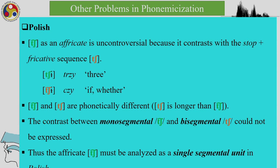This analytical issue is called the segment sequence problem, and it is easy to solve if there is an actual contrast between a segment and a sequence. The affricate 'cha' is uncontroversial because it contrasts with the stop-plus-fricative sequence in Polish. In Polish, the affricate and the fricative sequence are phonetically different — the affricate is shorter. The contrast between the mono-segmental and bi-segmental versions could not be expressed otherwise, so the affricate must be analyzed as a single segmental unit in Polish.